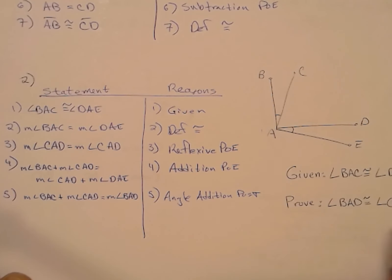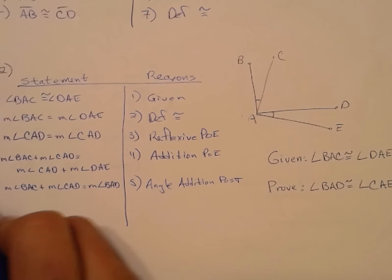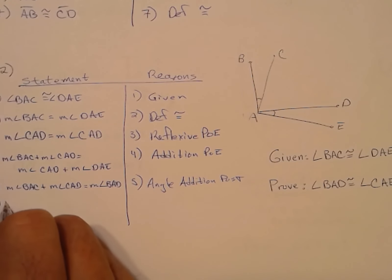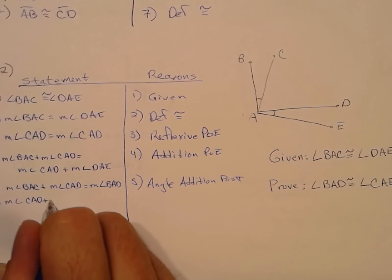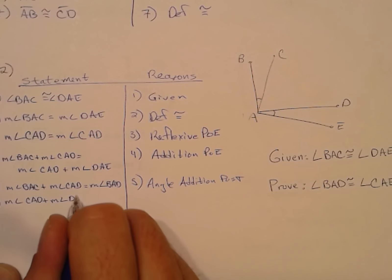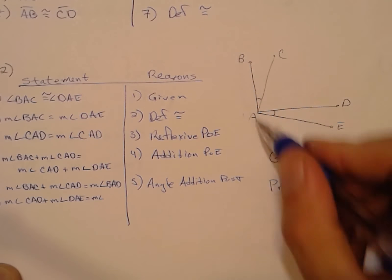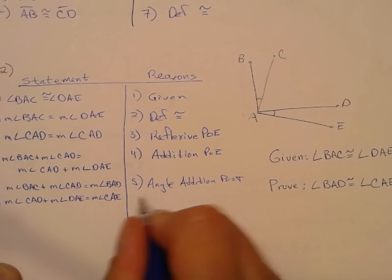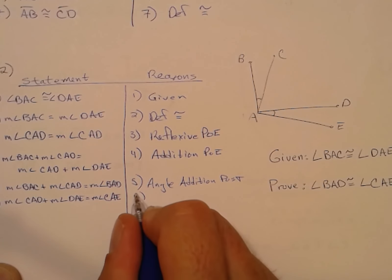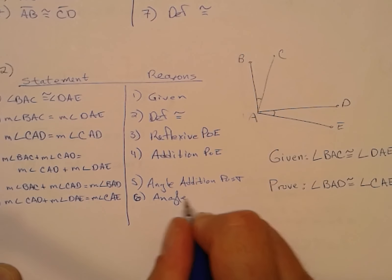I said that about angle BAD, so I might as well say the same thing about angle CAE — that's really made up of two little angles added together. The measure of angle CAD plus the measure of angle DAE add together to be the measure of angle CAE. That's also the angle addition postulate.